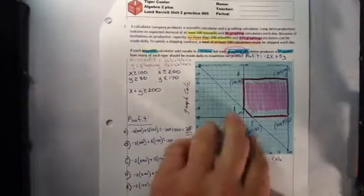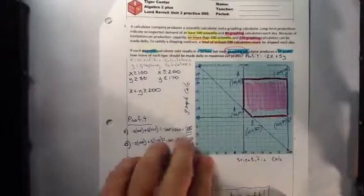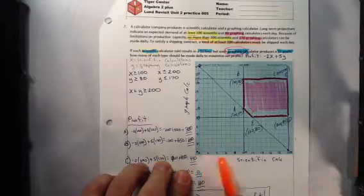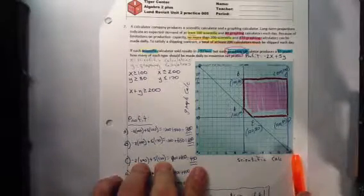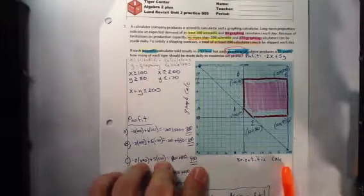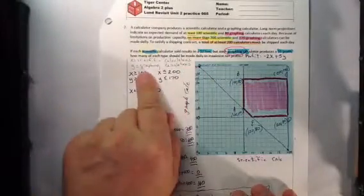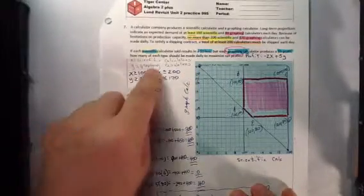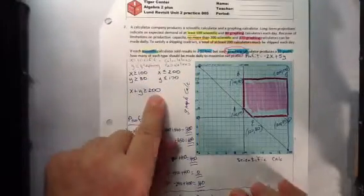I've provided a 20 by 20 grid to make it easier to graph. I went from 0 to 200 on the X, which was the scientific calculators, 0 to 200 on the Y for the graphing calculators. At that point, we have to graph the 5 constraints.